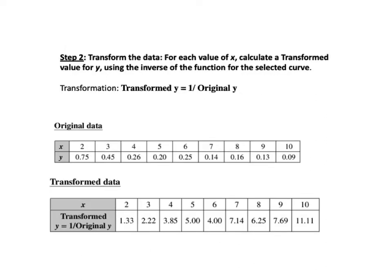Step 2, transform the data. For each value of X, calculate a transformed value for Y using the inverse of the function for the selected curve. Earlier we showed graphs of exponential and logarithmic functions. These two types are inverses of each other. In our example with a power curve, Y equals 1 over X. So algebraically, X equals 1 over Y. So we apply the transformation Y equals 1 divided by Y. That is, a transformed Y equals 1 divided by the original Y. And the specific equation can be determined by solving for X algebraically.